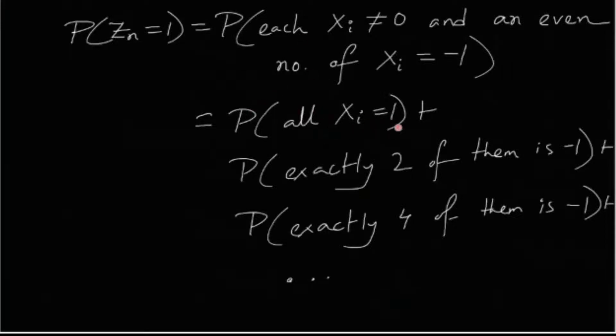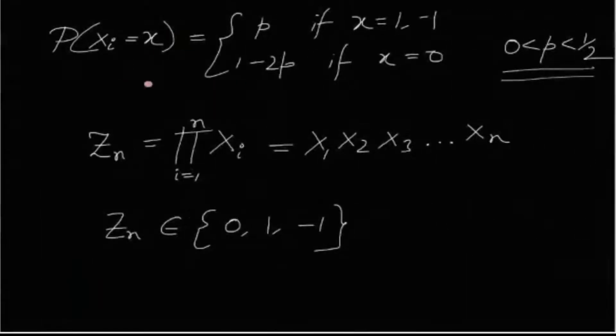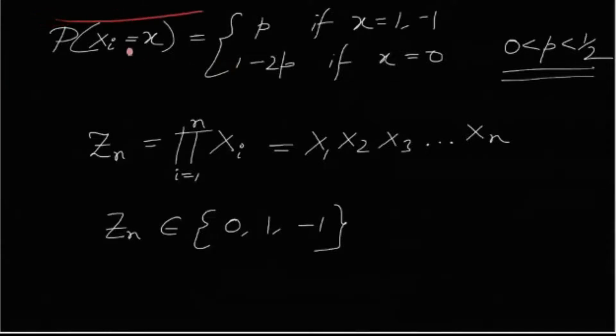Now the good thing is that xi being 1 and minus 1 are both equally likely. It has the same probability. We know the PMF of xi. So probability xi equals to x is p if both x is equals to 1 or minus 1.